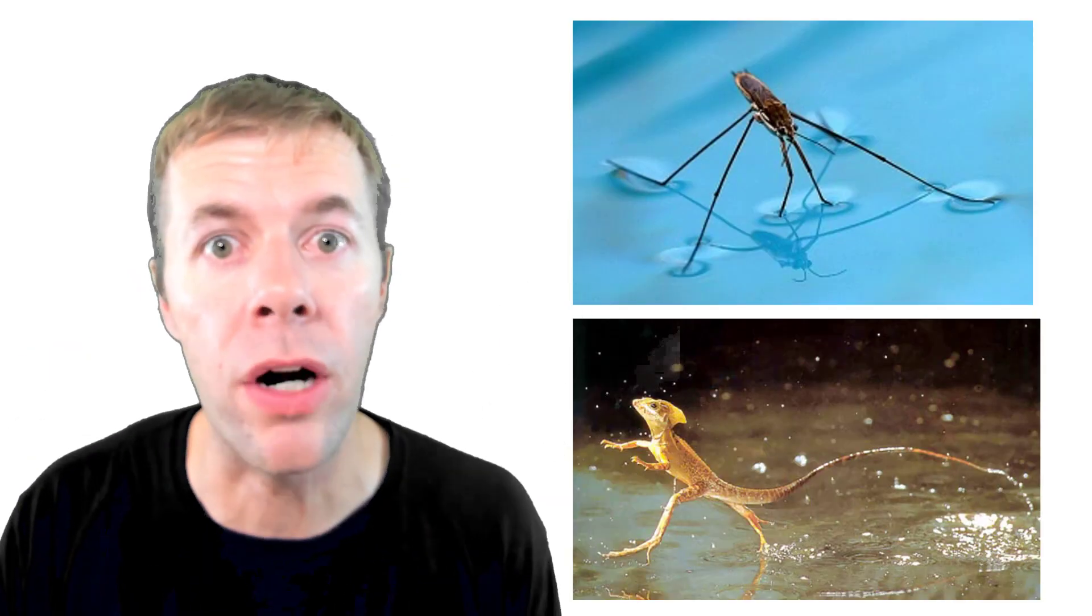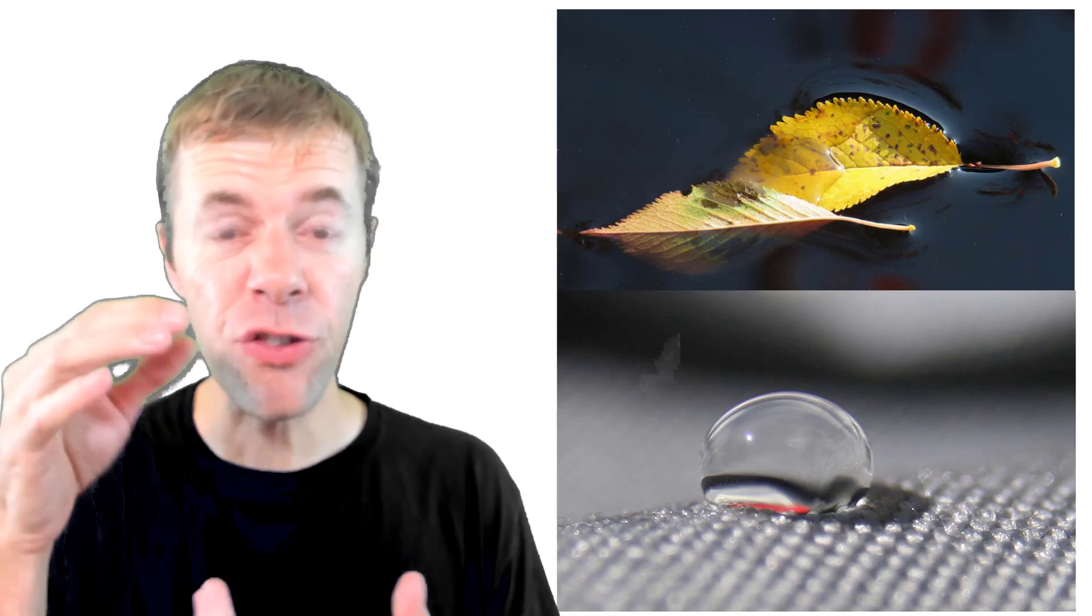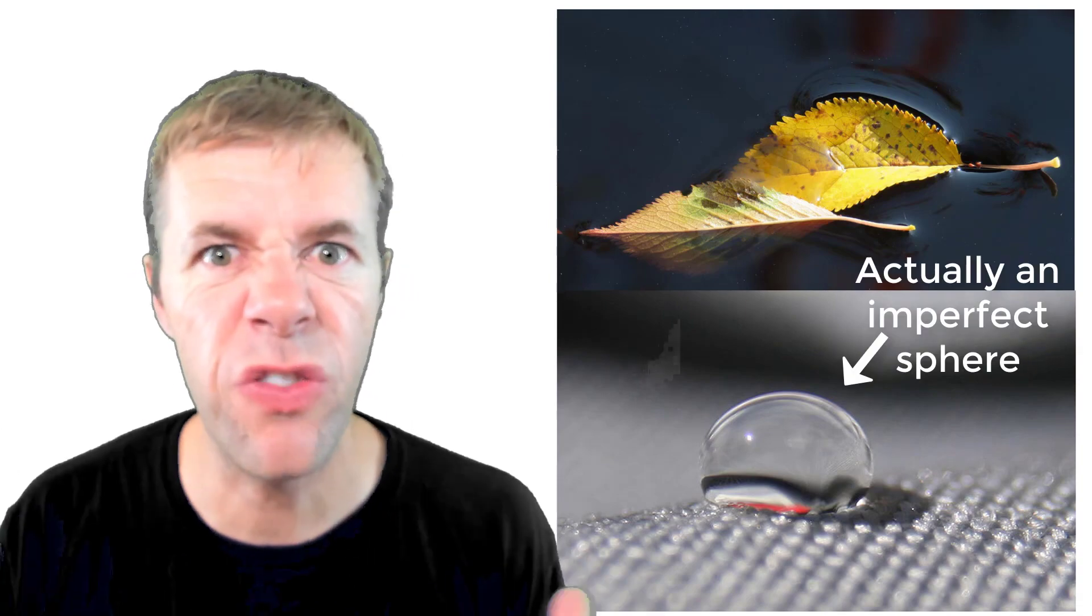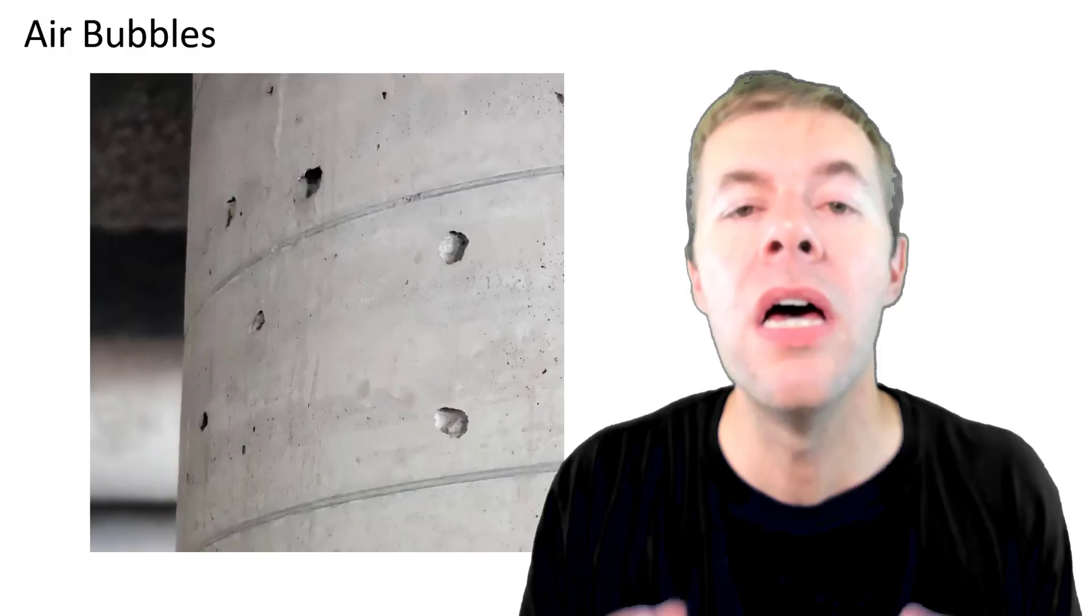And this surface tension concept is all around us in nature. That's why bugs and lizards can run on the water. That's why leaves float on the water. Or when a water drop falls, it forms like this perfect sphere. It's pretty awesome.